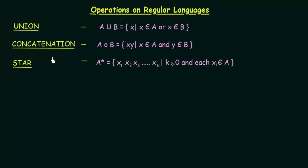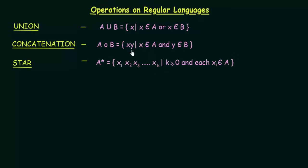Coming to the next operation, Concatenation. A Concatenation B — concatenation is denoted by a small circle and equals XY such that X belongs to A and Y belongs to B. This basically means joining two symbols or strings together. When you join two or more strings or symbols, that is concatenation. You take X from A and Y from B and join them together as XY.